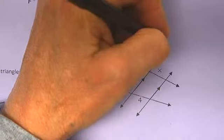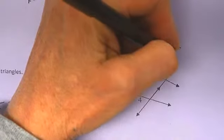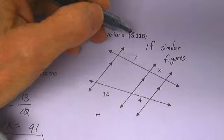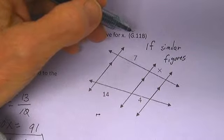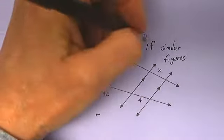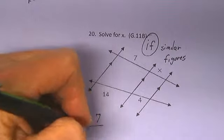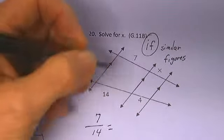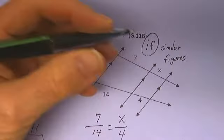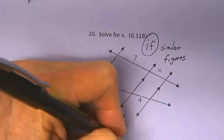If we have similar figures, and I don't actually know that we do, but let's assume we have similar figures. Then we could say 7 is to 14 as X is to 4, and that would mean X is equal to 2.